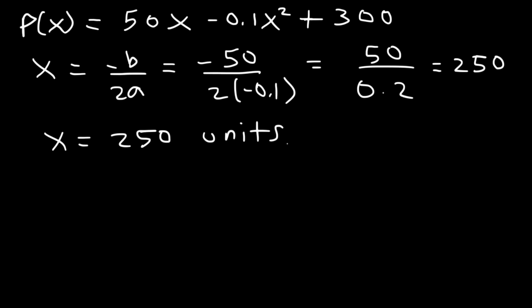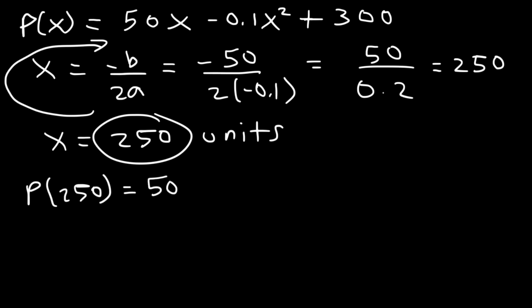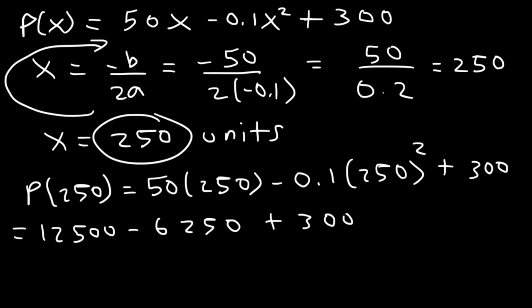Now to find the maximum profit we need to find the y value of the vertex. So basically we're going to take x and plug it back into this equation. So we've got to find the profit when x is at 250 units. So let's replace x with 250. 50 times 250 that's equal to 12,500. 250 squared times 0.1 that's 6,250. And if we add these three numbers, the maximum profit is 6,550. And that's it.